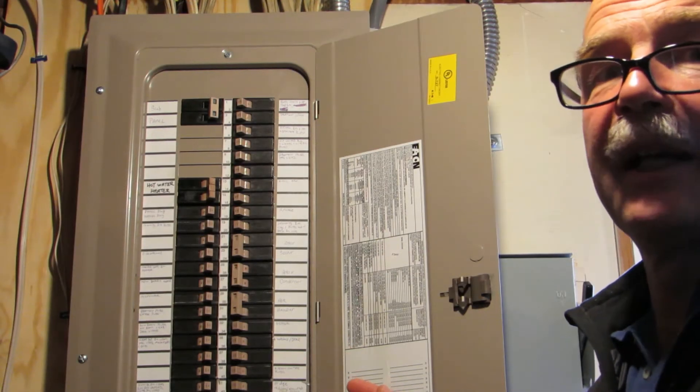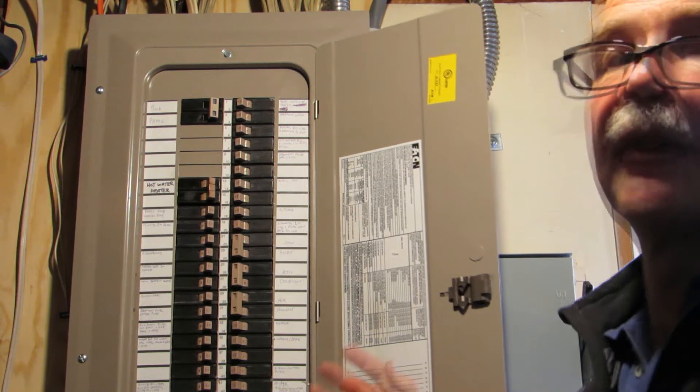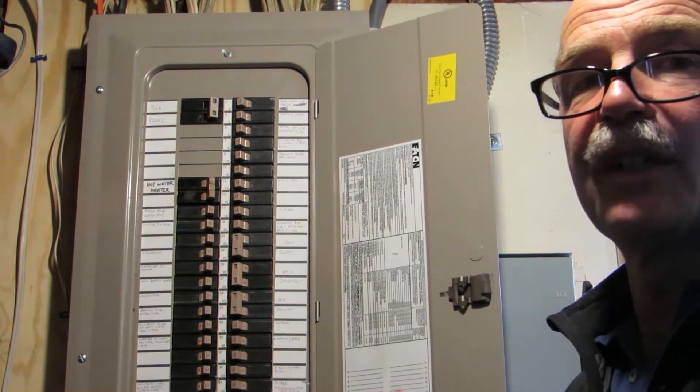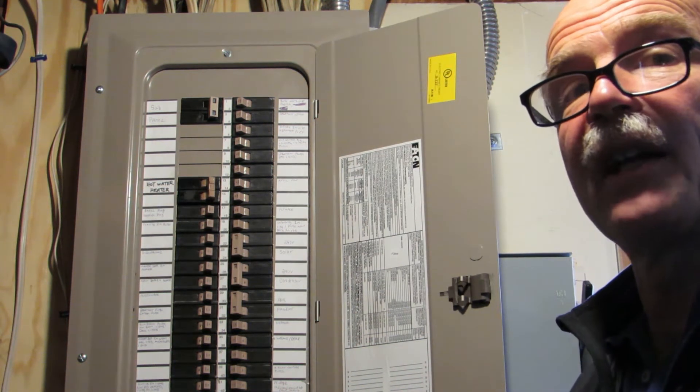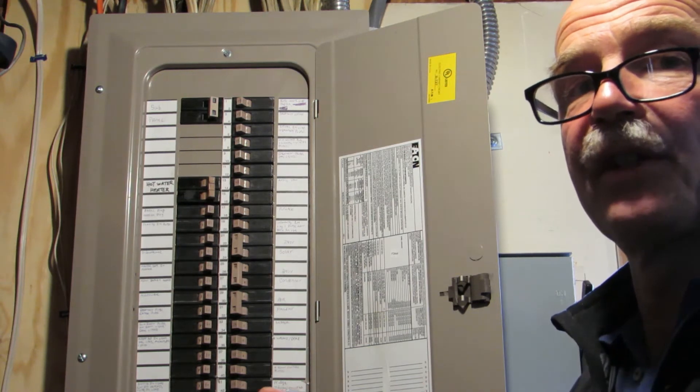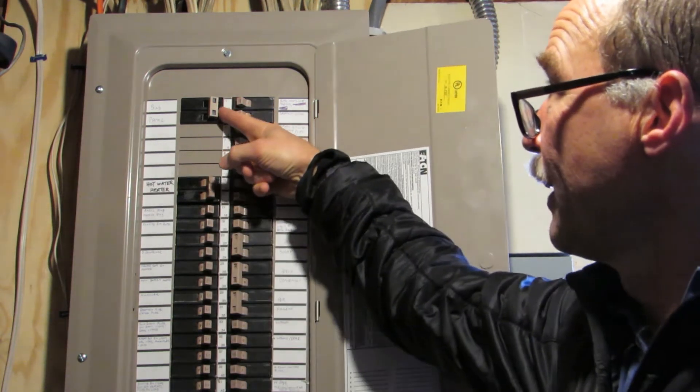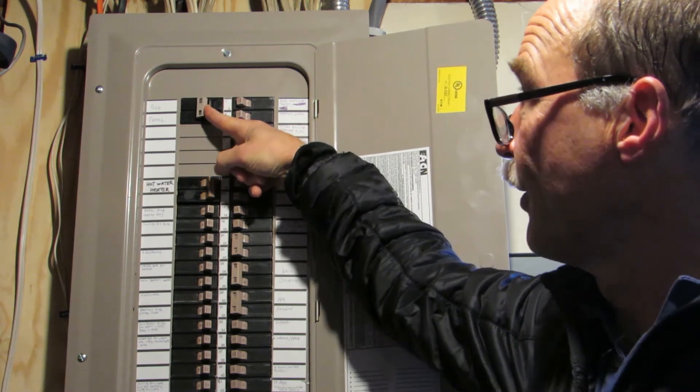Here we are at the main circuit breaker panel for the house, and we're going to install the charging station in the garage, and there's a sub-panel in the garage. So to be safe, we're going to turn off the electricity of the sub-panel. We're going to do that by just flipping this 100-amp breaker over like that.